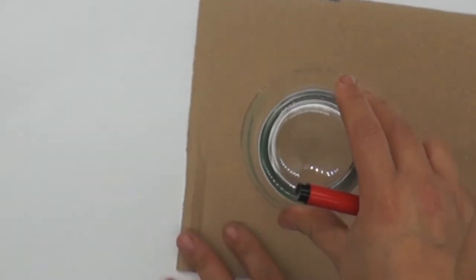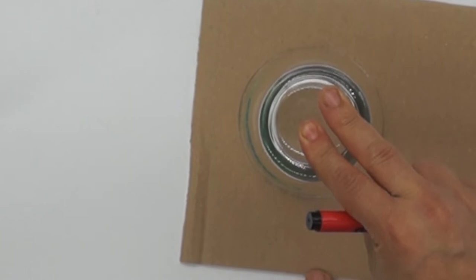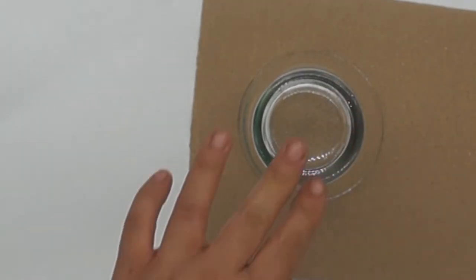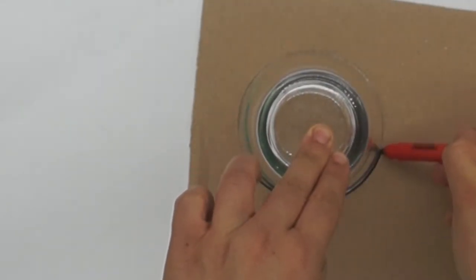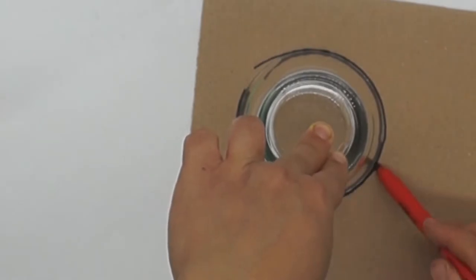Then you just need to draw around it. It depends on the size of pom-pom you want - if you want a large pom-pom or a small pom-pom, so take that into consideration.